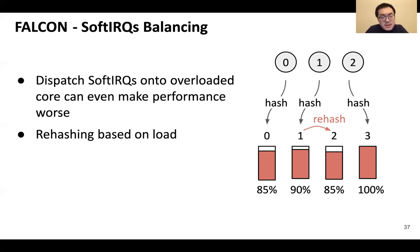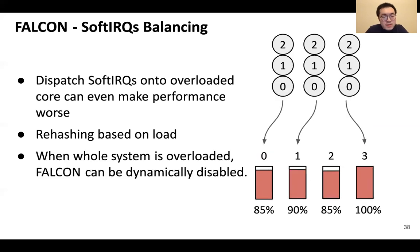We also realized that when the whole system is heavily loaded, Falcon incurs additional overhead due to the loss of packet locality. In this case, there are no available CPU resources for parallelization, and Falcon can even degrade performance. To avoid this, we dynamically disable Falcon when the overall system load is greater than a threshold — 90% by default, and also configurable.